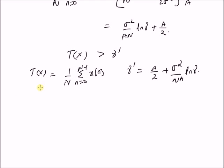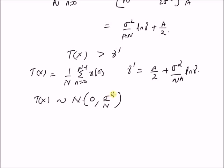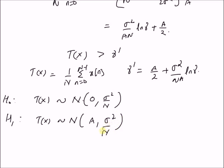We can see that the test statistic T(x), the sample mean, will also follow a normal distribution under both hypotheses. Under the null hypothesis, T(x) follows a normal distribution with mean 0 and variance sigma^2/N, because the mean of x(n) is 0 under H0 and the variance of the sample mean is sigma^2/N. Under the alternate hypothesis, T(x) follows a normal distribution with mean A and variance sigma^2/N, because the mean of x(n) is A under H1.